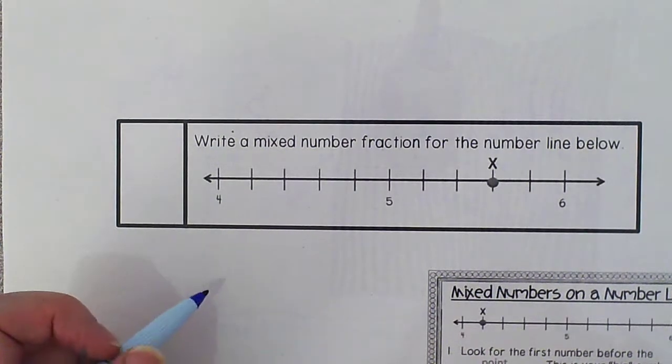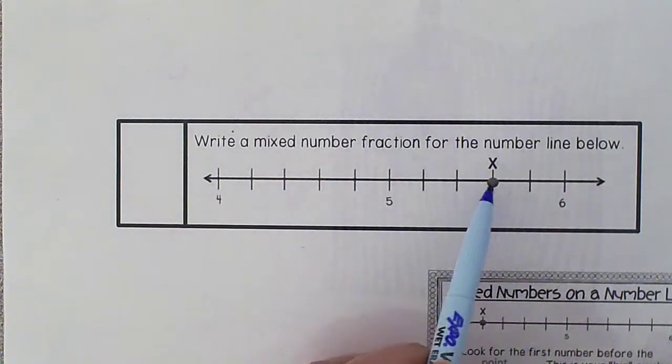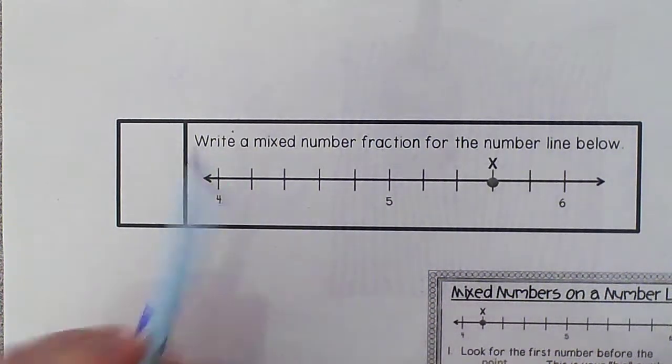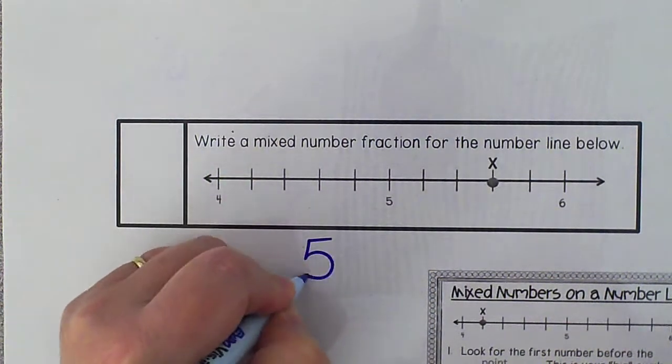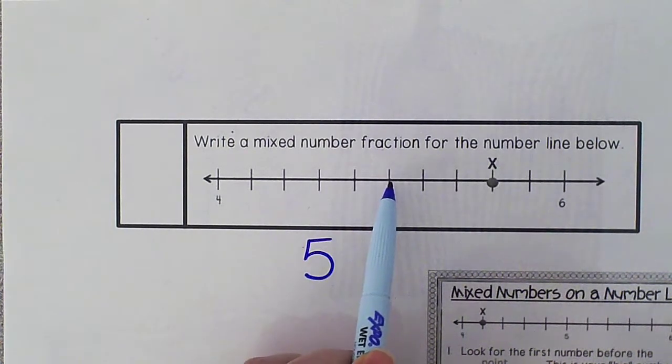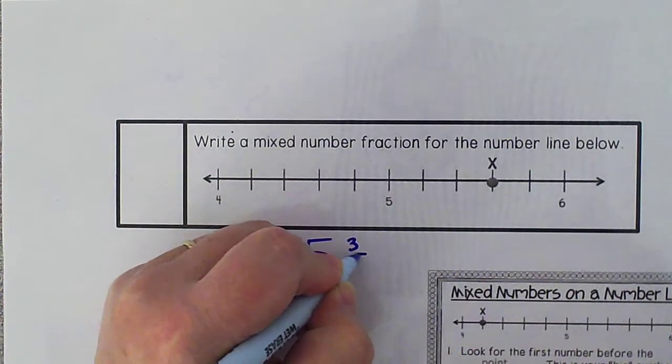So the first thing we're going to do is look at the number before our point. Our point here is point X. The number before X is a 5, so I'm going to write a big 5. Next, we're going to count how many lines past the 5. So this is 5 here. 1, 2, 3. My numerator is a 3.